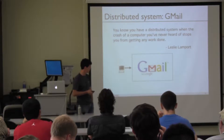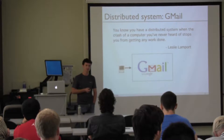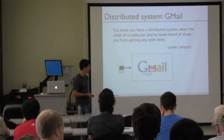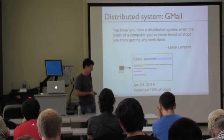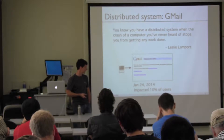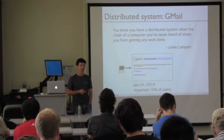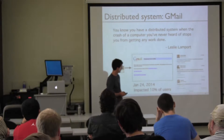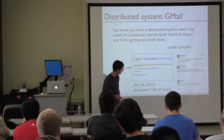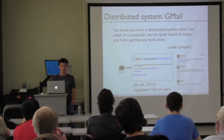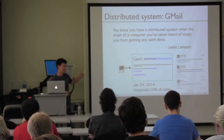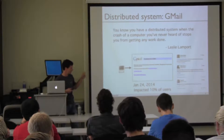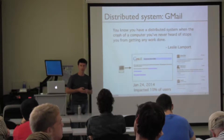To give a more concrete example, many of us are users of Gmail. A user accesses Gmail through a browser and is completely unaware that when interacting with Gmail it's a distributed system underneath. You only realize this may be the case when there's an outage. Here's an outage that occurred in January 2014 that impacted about 10% of users of Gmail. It lasted for a significant amount of time — long enough for people to go and complain about it on Twitter.